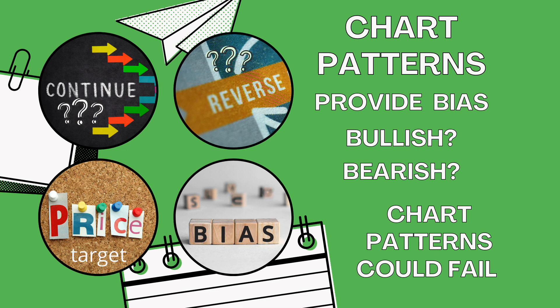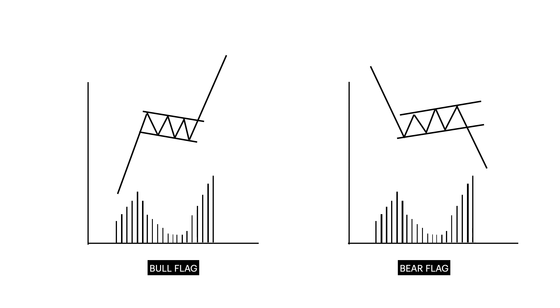It is important to remember that chart patterns could also fail. Flags and pennants are continuation patterns — they are short-term consolidation zones within a trend. When flags and pennants are completed, the resulting move is usually a strong vertical price move that is called a pole.